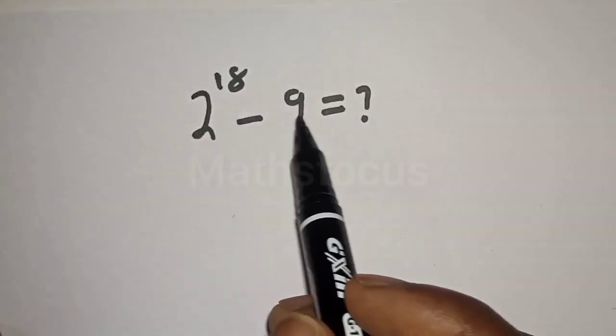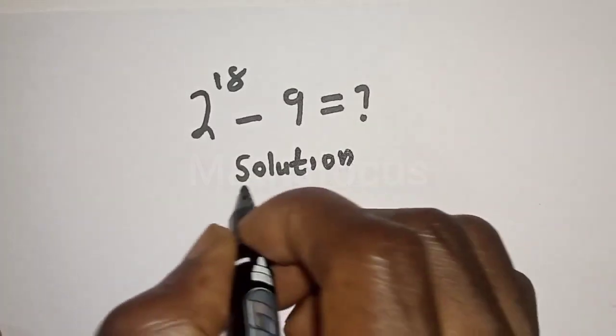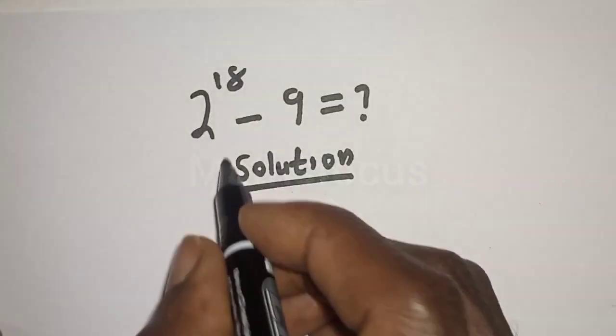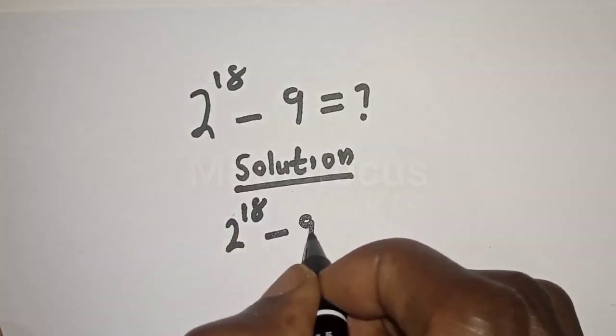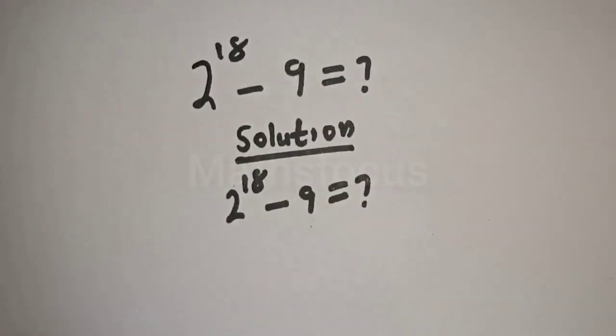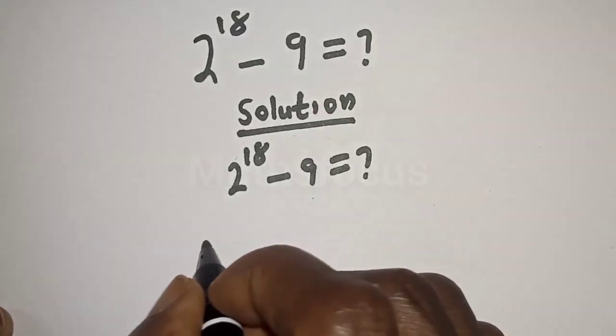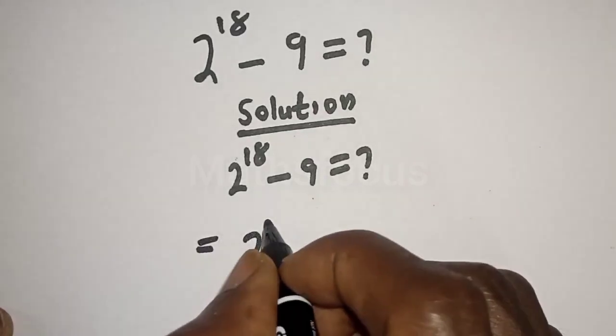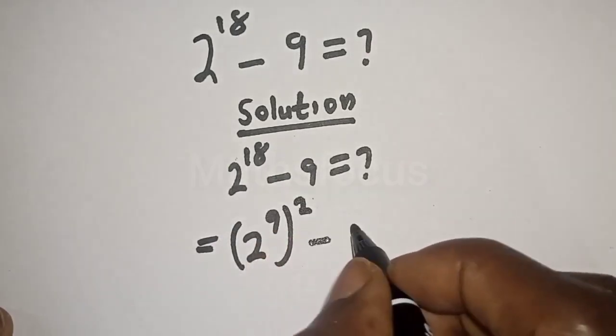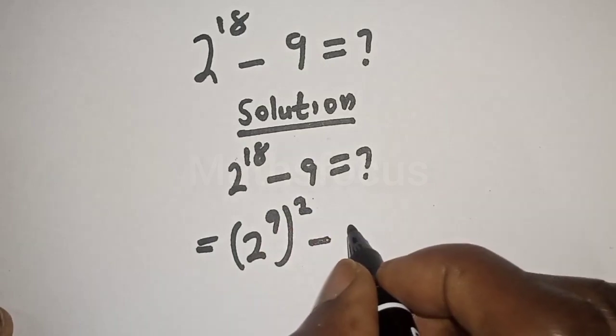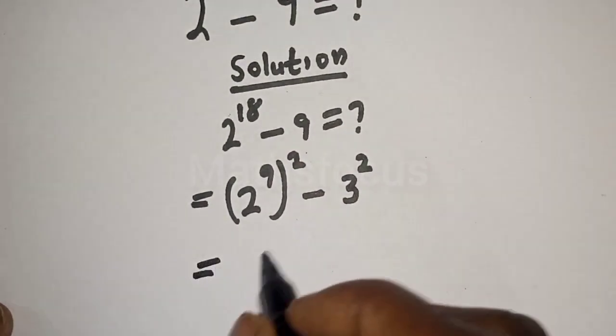2 raised to power 18 minus 9 is equal to what? Solution: We have the given equation 2 raised to power 18 minus 9. We don't know the value. Now, 2 raised to power 18 can be rewritten as 2 raised to power 9 squared minus 9 can be rewritten as 3 squared.